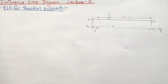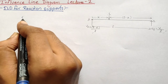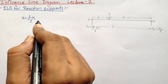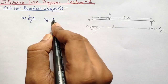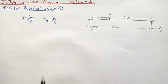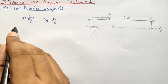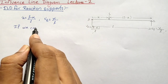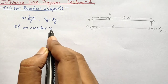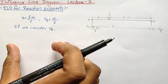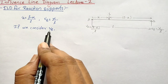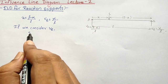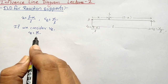We have VA equals (L minus x) upon L and VB equals x upon L. Now let us draw the influence line diagram for VB, that is the reaction at support B. We have VB equals x upon L.